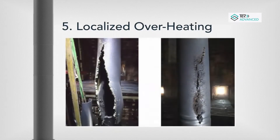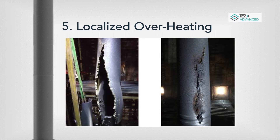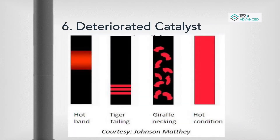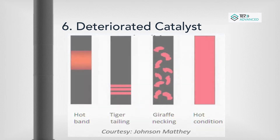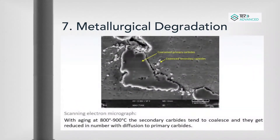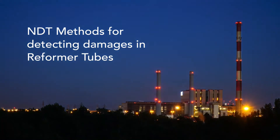Number five: localized overheating — misalignment of burners leads to disturbance in flue gas path or clogging of the catalyst due to degradation. Number six: deteriorated catalyst — due to aging or increased flow rate, the catalyst's nickel monoxide undergoes rubbing and relative movement of particles making them more friable; fine particles settle down choking the passage of gas. Number seven: metallurgical degradation — the metal elements used in making the reformer degrade due to excessive use.